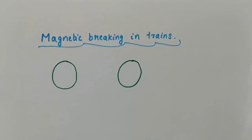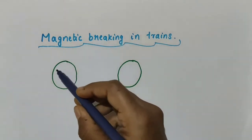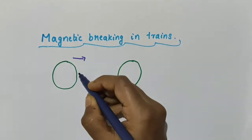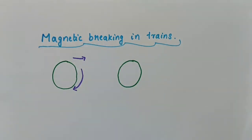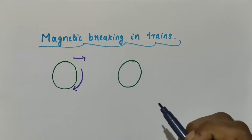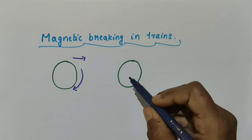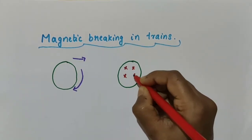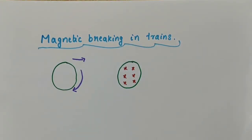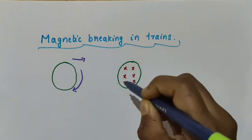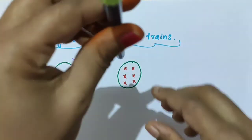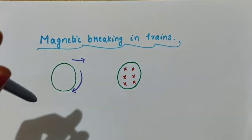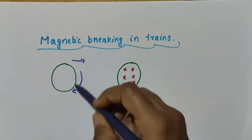That magnetic field will induce eddy currents in the wheels. For example, let this be the wheel of the train. Before activating the electromagnet, the train moves in the forward direction, so the wheel will be rotating. Now when the electromagnet is activated, the wheel gets exposed to the magnetic field produced by the electromagnet. Let these cross marks represent the magnetic field lines directed into the plane of the board.